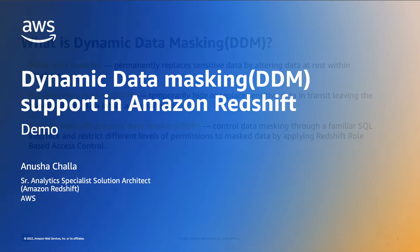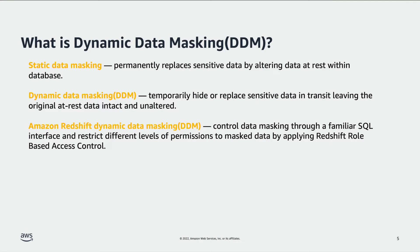Let's start with understanding the difference between static data masking and dynamic data masking. Static data masking permanently replaces data at rest. The downside is that users with legitimate permissions also can't view the data they need because it's already permanently modified. Dynamic data masking, on the other hand, hides or obfuscates sensitive data in transit without modifying data at rest. Data is displayed to users based on their privilege.